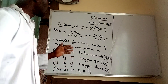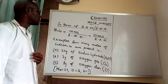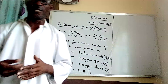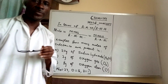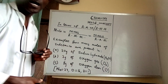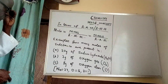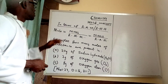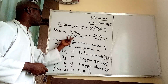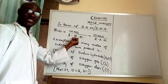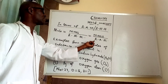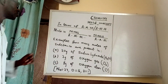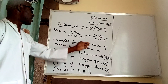These are example questions on the mole concept in terms of relative atomic mass and relative molecular mass. For a start, you need to know that moles can be calculated using the formula: mass over relative molecular mass for a compound, or mass over relative atomic mass for an element.